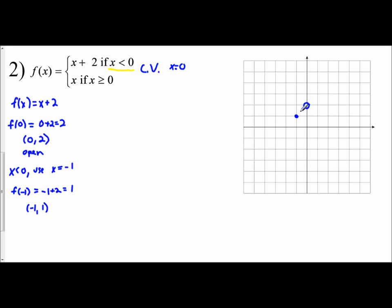I mark the point negative 1, 1, then take my line, start it at the open circle at 0, 2, and come down through the other point, extending it across the graph. That's the first piece — x plus 2 for x less than 0 — appearing to the left of the y-axis. We can see how these boundaries shape the functions.